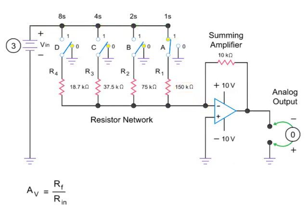Inserting the values into the equation, the gain equals 10 kilohms divided by 150 kilohms, or 0.066.